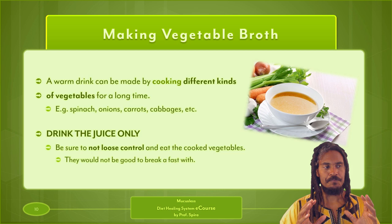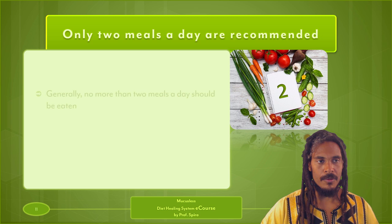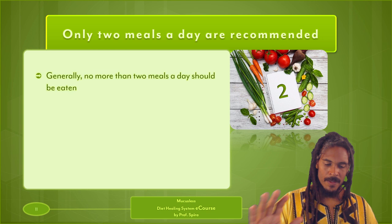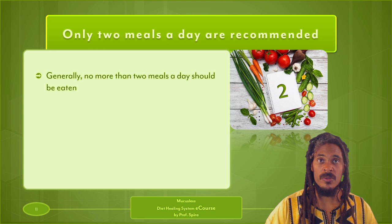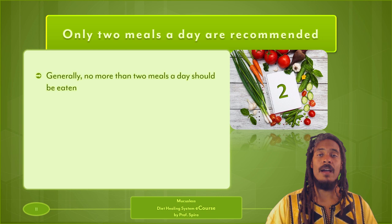Only two meals a day are recommended — that's the magic number for the standard Mucusless Diet Healing System approach. If you're used to grazing all day or having three, four, or five meals a day, you can transition yourself toward two meals a day. Instead of having small meals, we recommend having larger meals. You're not necessarily eating less — in some cases you might even eat more because we're eating mucus-free foods.